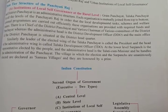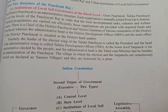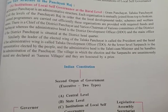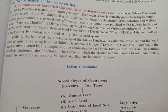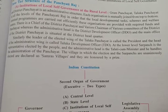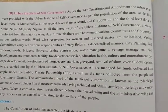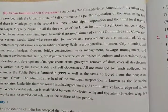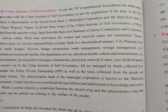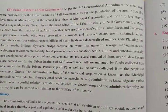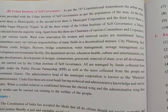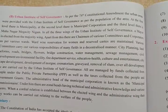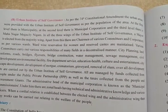Villages where elections and sarpanch selection happen unanimously — without voting — are declared as Samarras villages, and they are honored with a prize. Second is the Urban Institute of Self-Governance. As per the 74th Constitutional Amendment, urban areas were provided with Urban Institutes of Self-Governance based on the population of the area.